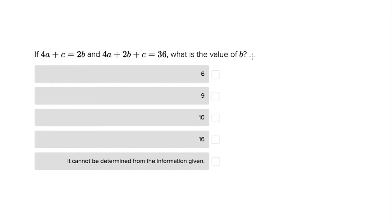So we want to find the value of b, and we have these two equations with a's and b's and c's. The good thing to remember is that we see the same terms in both equations. So we see 4a, c, and 2b in the first equation and the second equation.